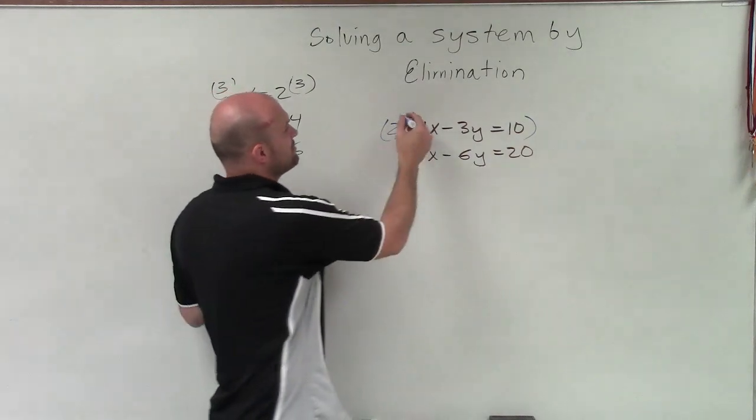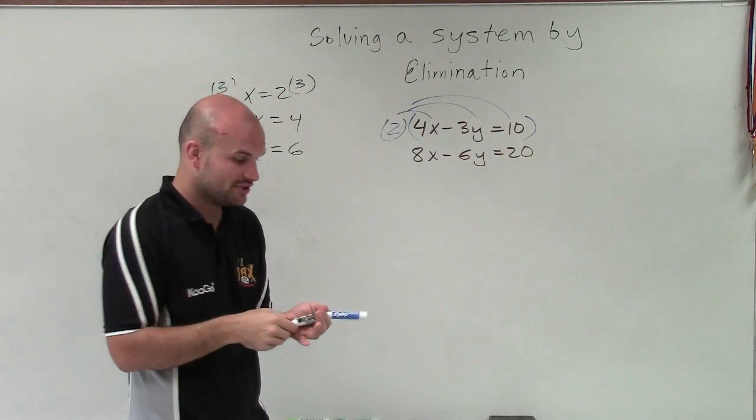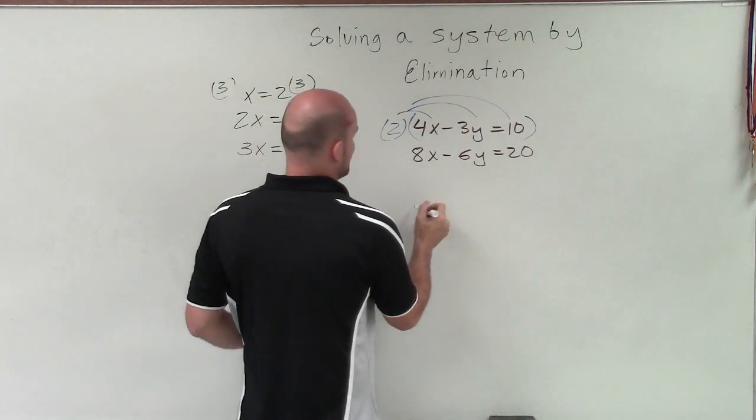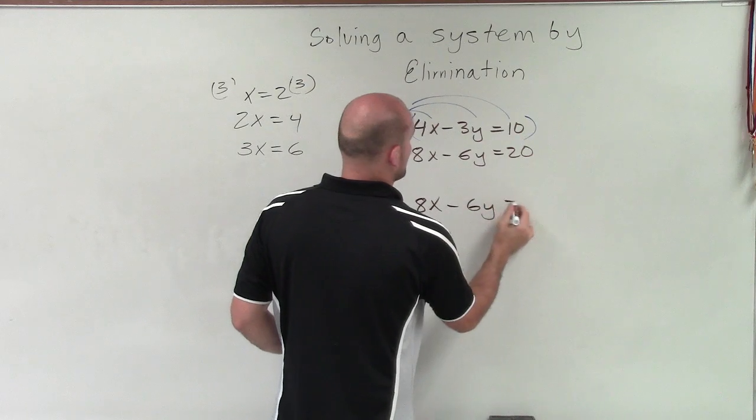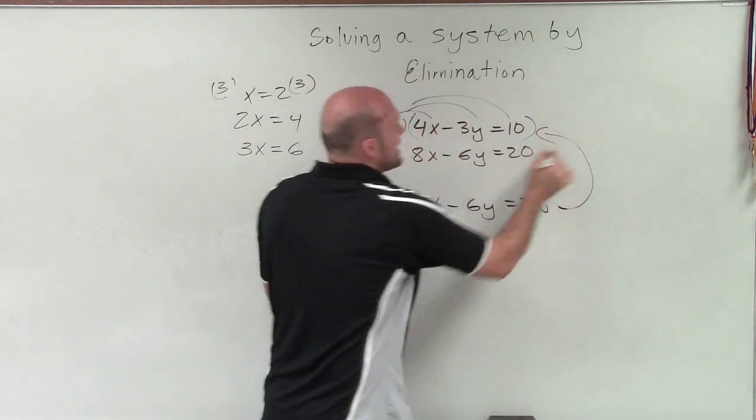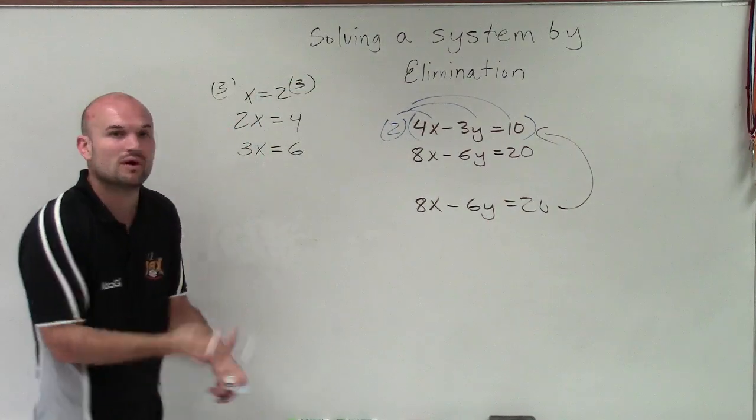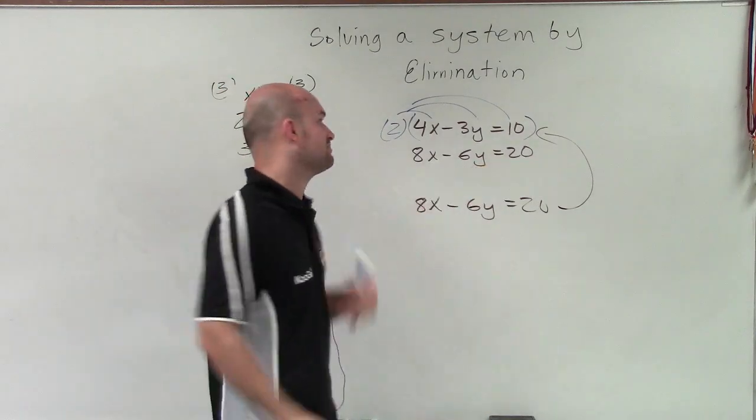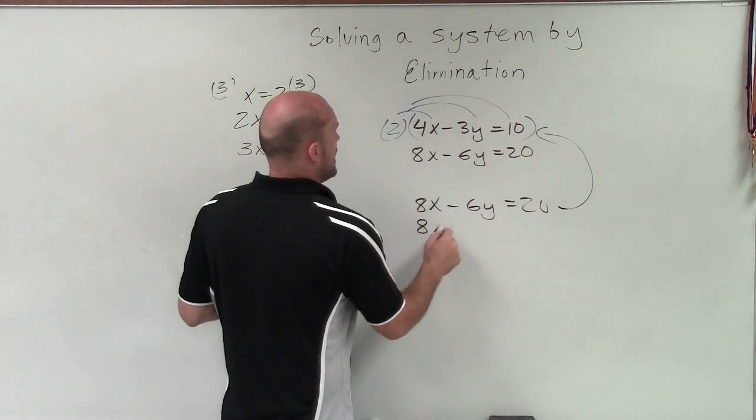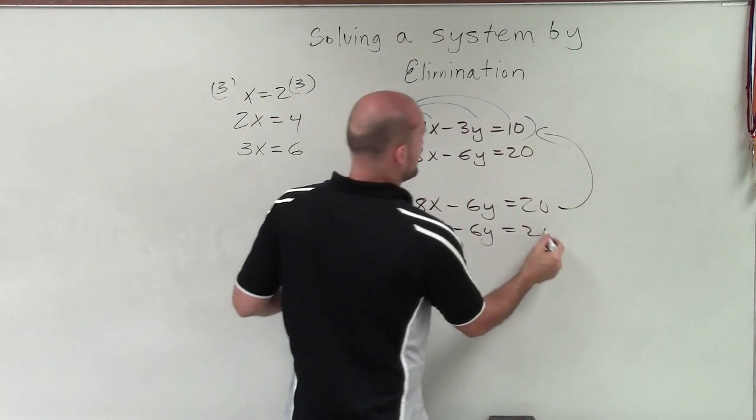So now, by looking at this, when I multiply my multiplier, now I'm going to create a whole brand new systems of equations, which is going to be 8x minus 6y equals 20. This equation is exactly the same as that equation. It's just like x equals 2 and 2x equals 4. It's the exact same. It's just being multiplied by a multiplier. So now I have 8x minus 6y equals 20.